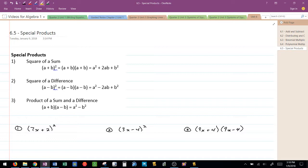I'm going to assume here that you understand the square of a sum is a² plus 2ab plus b², that the square of a difference is a² minus 2ab plus b², and the product of a sum and a difference is a² minus b².